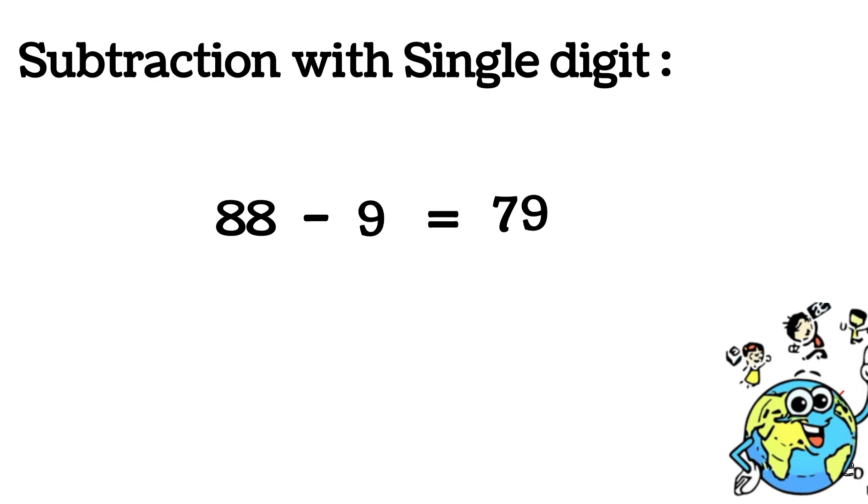We are taking the second example. That is 76 minus 8. Here the first number is 7. 7 before number is 6. That is the first part of the answer.